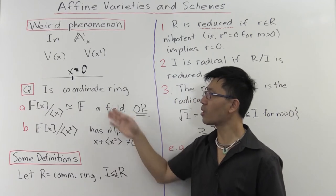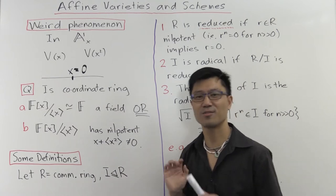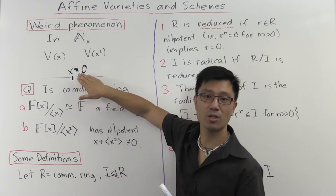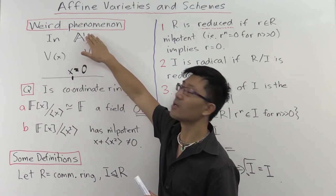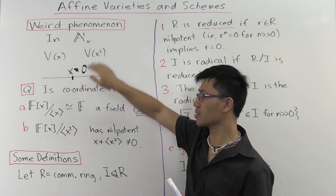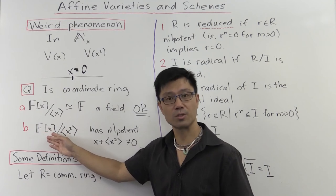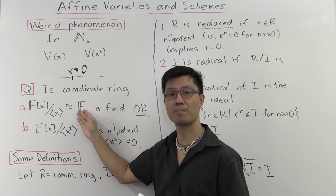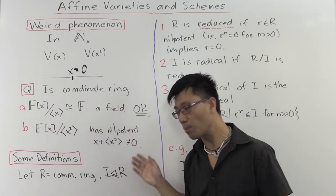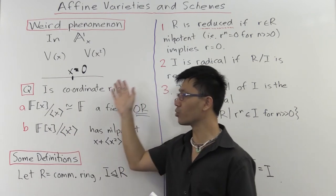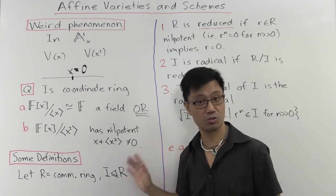The question arises: what's the correct choice for the coordinate ring of this point? In this case, the answer is fairly easy. A single point can be thought of as affine space A^0, and the corresponding coordinate ring should be polynomials in 0 variables, which is just the field f. So the quotient by (x) is the correct one, and the quotient by (x²) is the incorrect one. But we should see precisely why that's the case, and to understand this more generally, we need to introduce some new definitions.